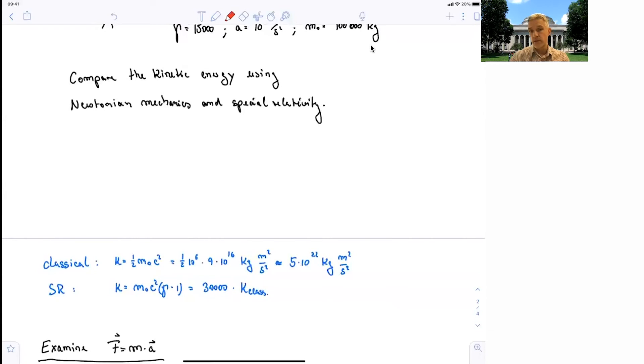So 30,000 times larger than the classical case. So there's a huge difference between the classical evaluation and the evaluation in special relativity.